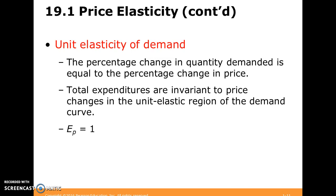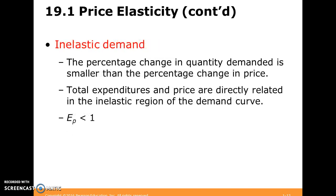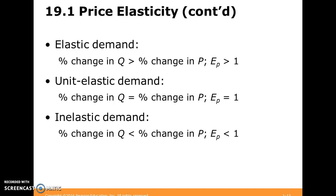Then we have unit elasticity of demand, where the percentage change in quantity demanded is exactly equal to the percentage change in price, so total expenditures don't really change — they're invariant to price changes. And then we have inelastic demand, where the percent change in quantity demanded is lower than the percent change in price. Total expenditures and price are directly related in the inelastic region, and demand elasticity is less than one. Here's a helpful cheat slide you can put on a note card.